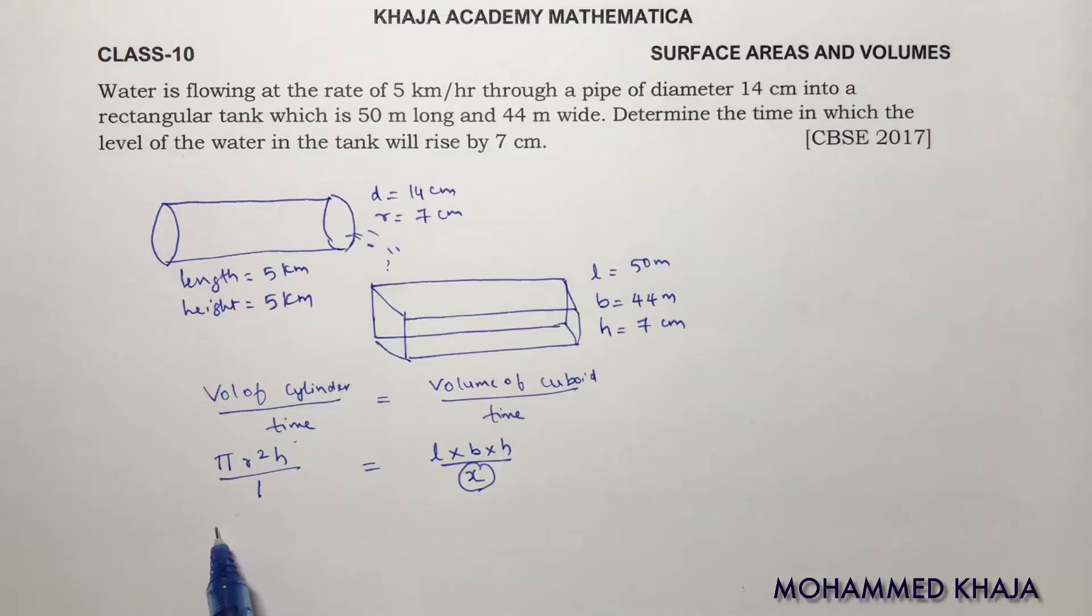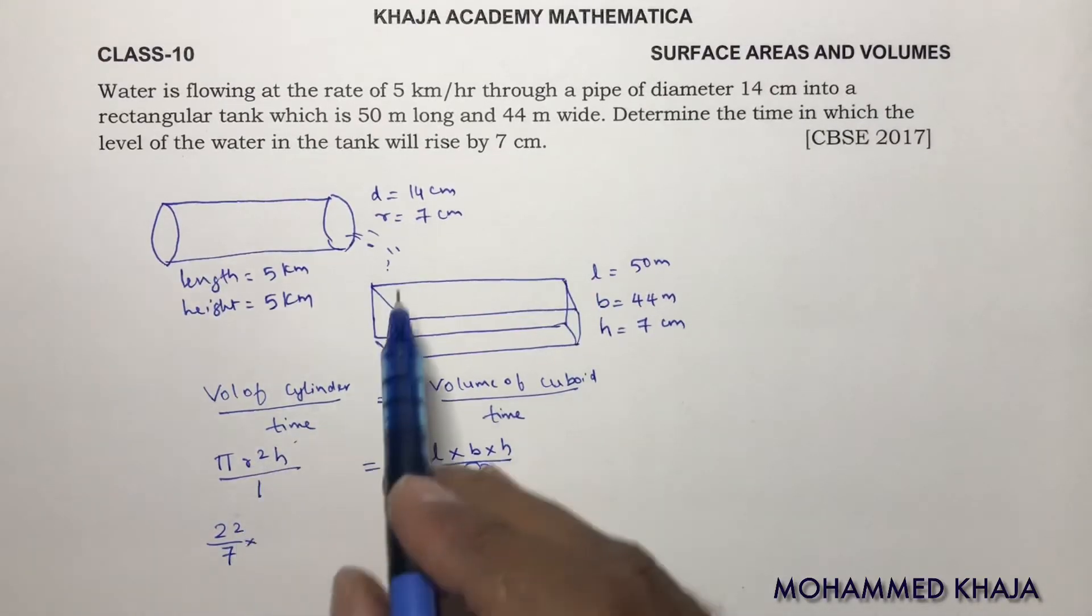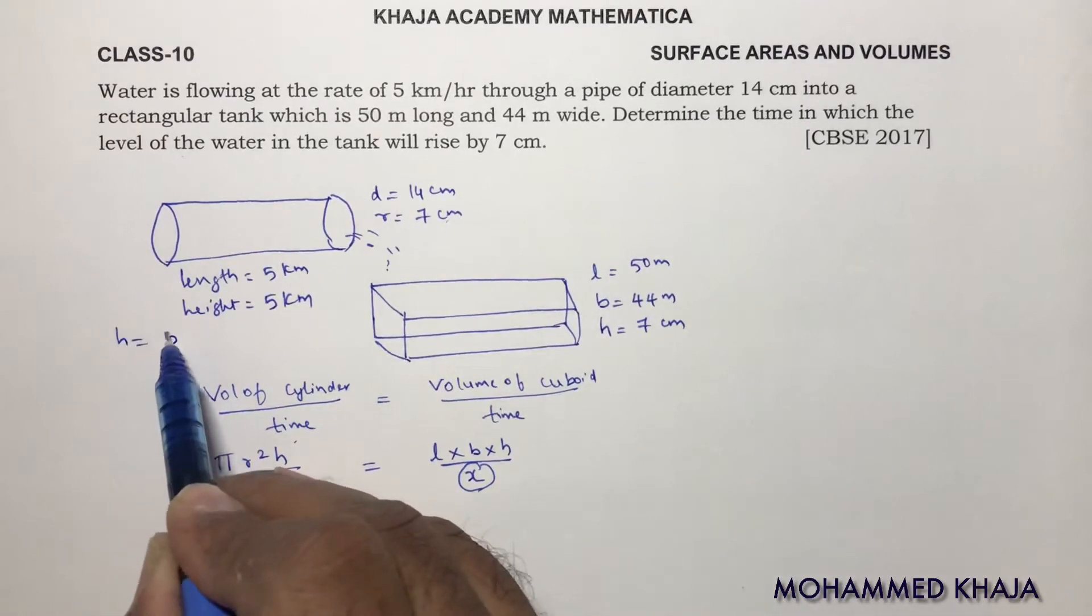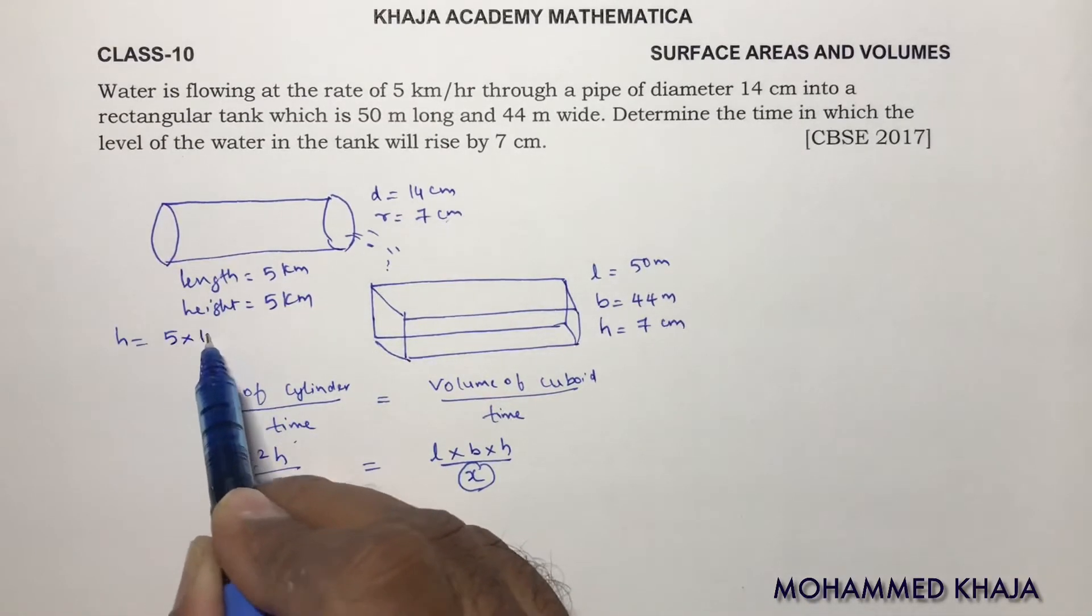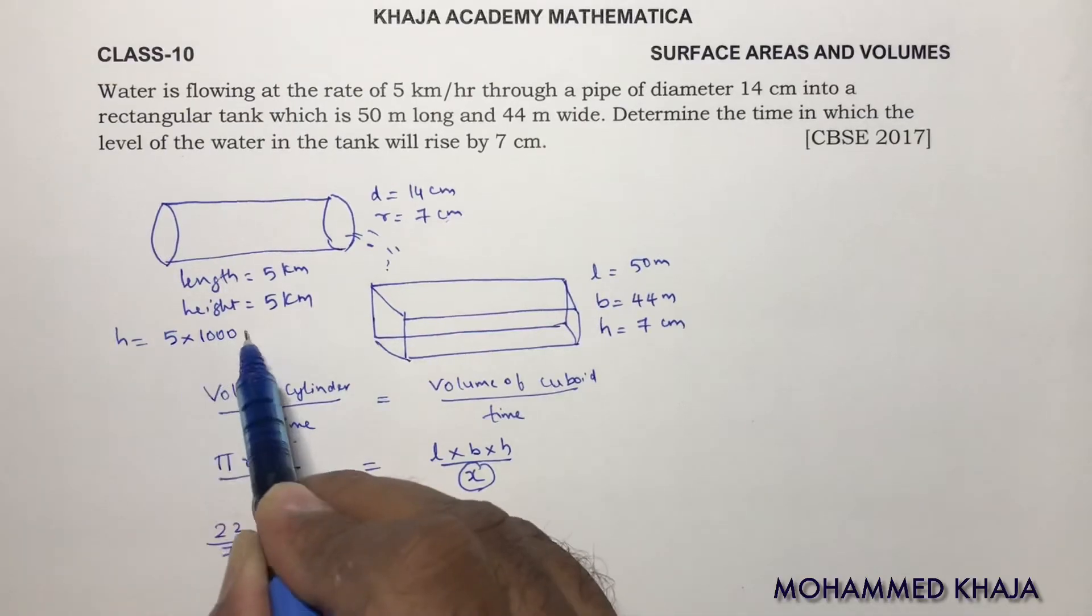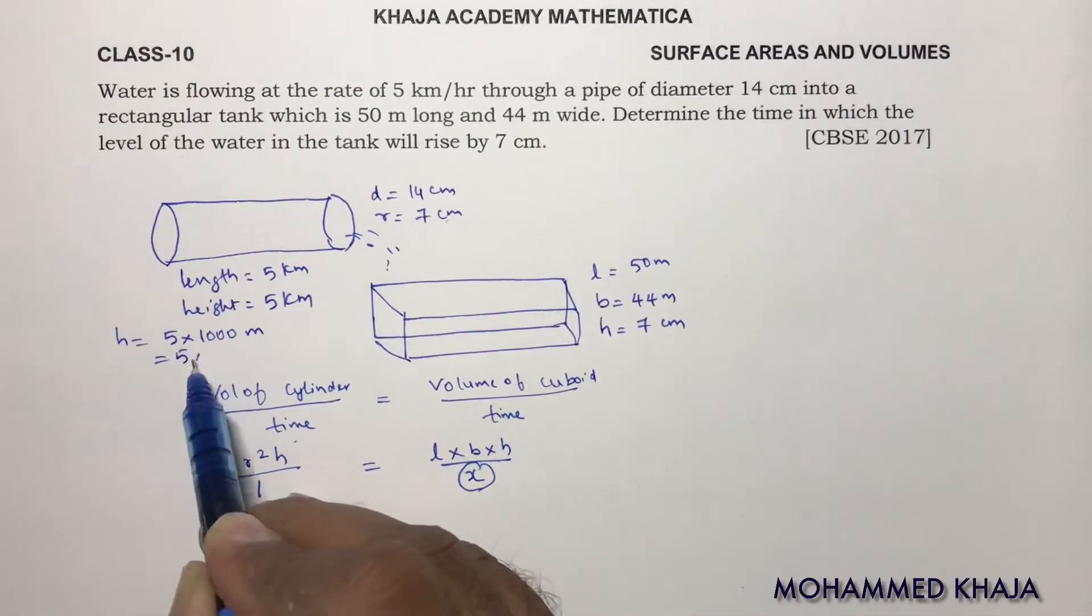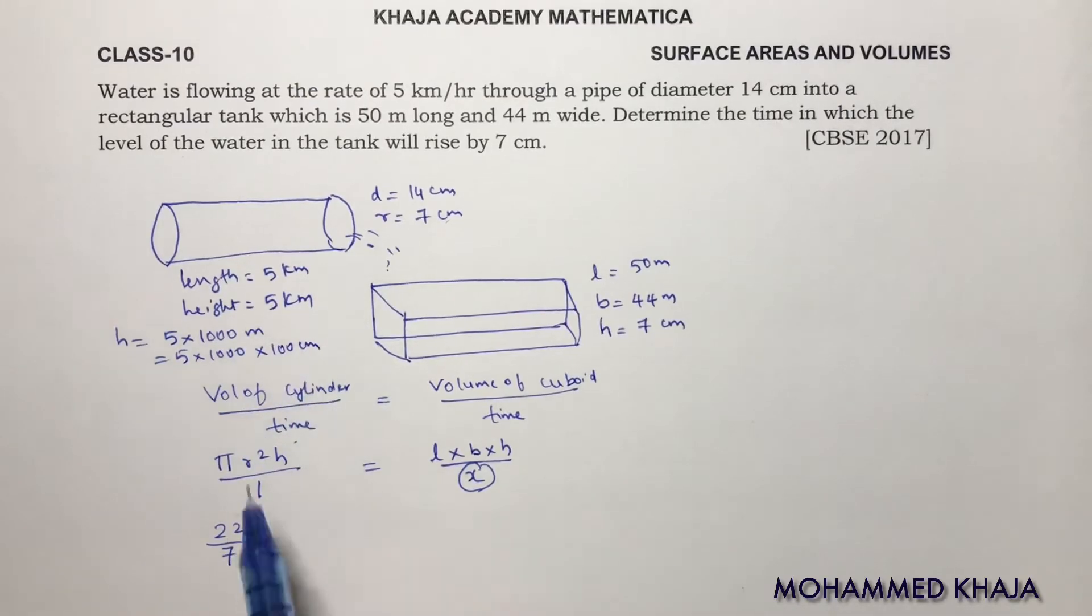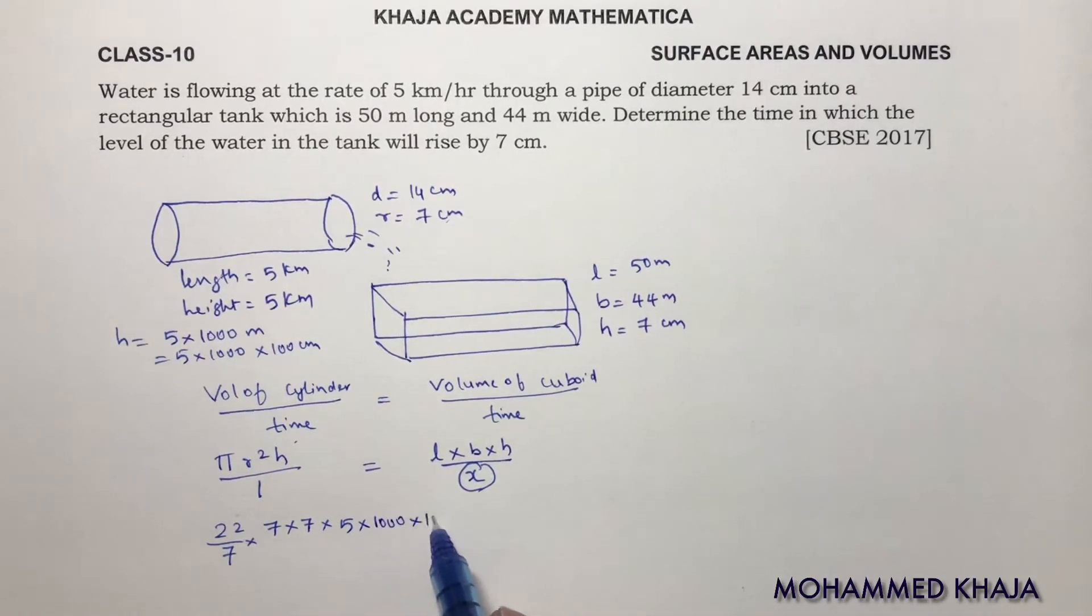Now substitute the values. Like 22 by 7, but before that, here radius is 7 cm. So write height also in terms of cm. 5 times 1000, this is meters. 5 times 1000 times 100 if I do, that will become centimeter. So here radius is 7 times 7, height is 5 times 1000 times 100.